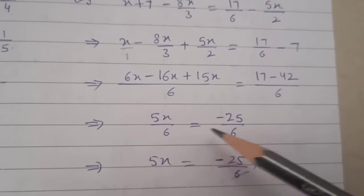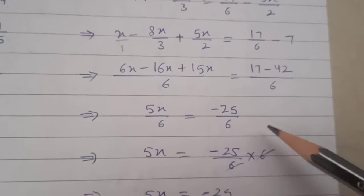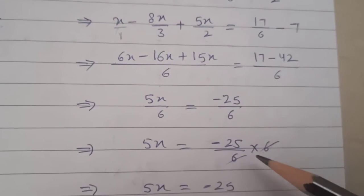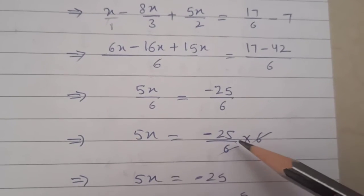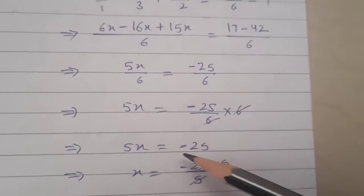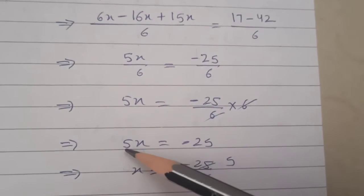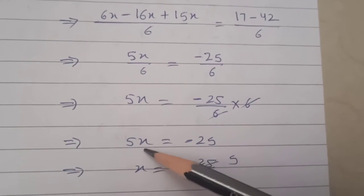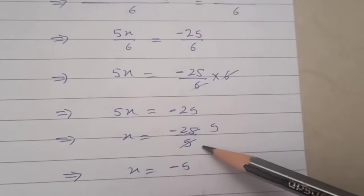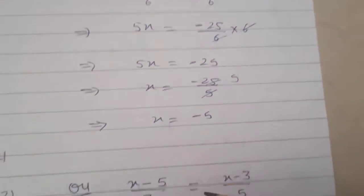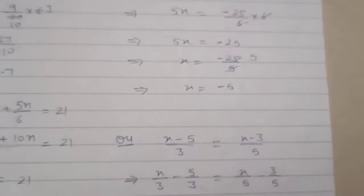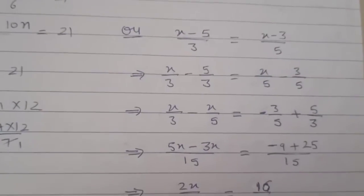So 6 is dividing here and will multiply on the other side — 6 cancels with 6. So 5x is equal to minus 25. Then 5 is multiplying here, so it divides on the other side. And x is equal to minus 5.